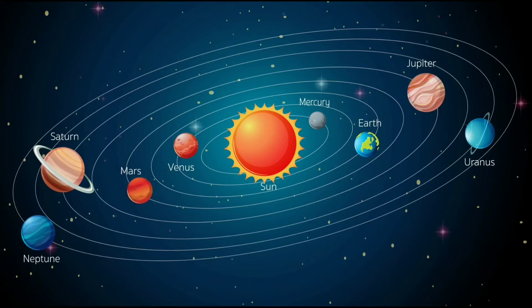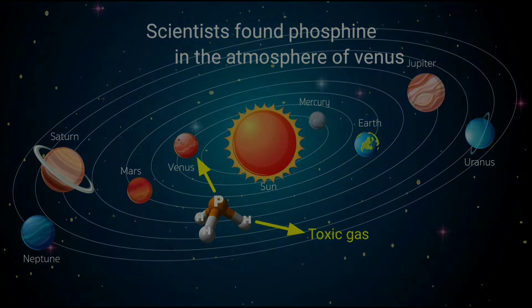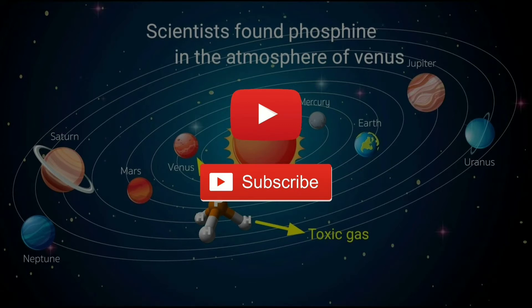Hello everyone. Recently a news broke the internet that scientists found phosphine in the atmosphere of Venus, which is considered to be a big sign of life. Why is a toxic gas like phosphine considered to be a big sign of life on other planets? Watch the video till the end to get the answer and if you are new here, subscribe to our channel to watch videos of straight facts without any unnecessary illustration.